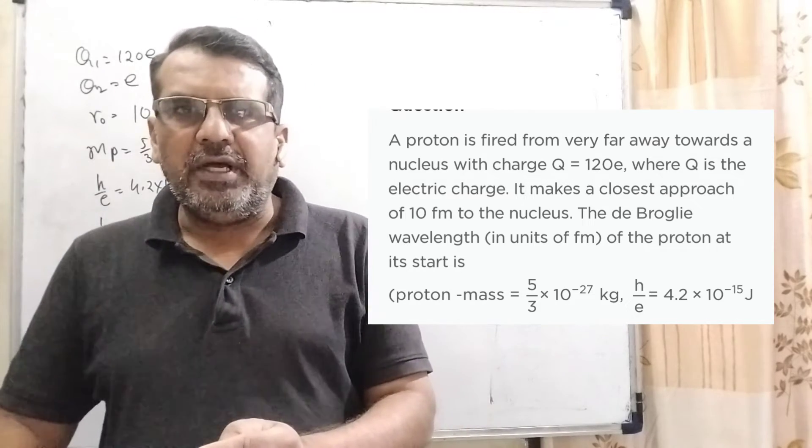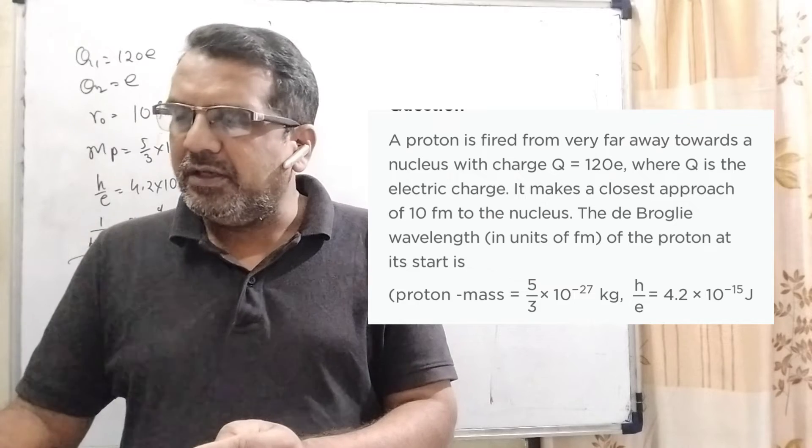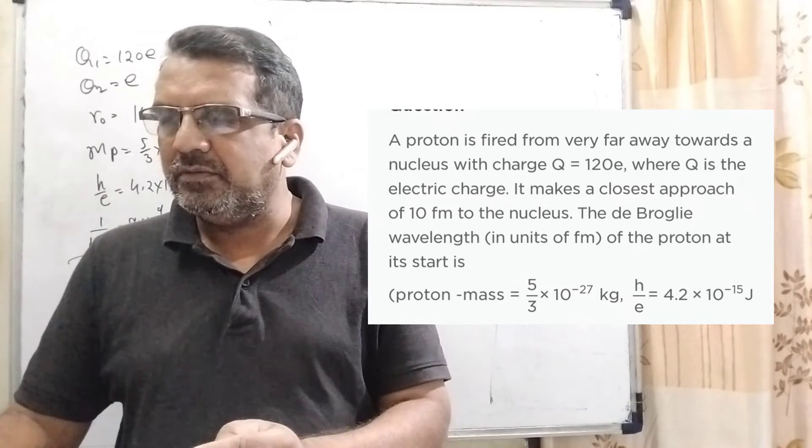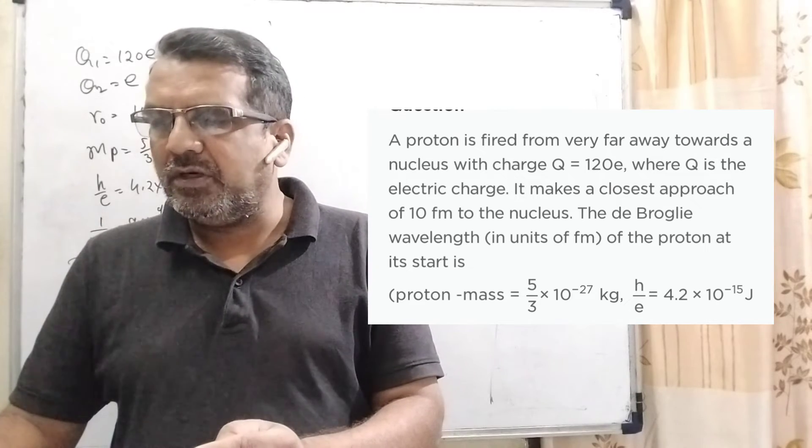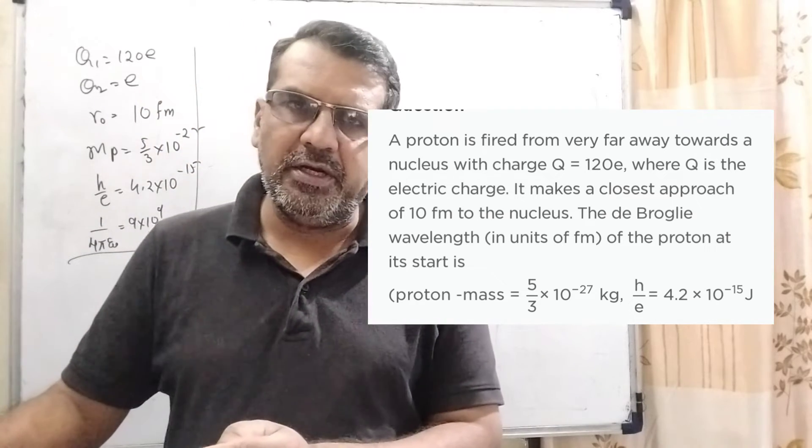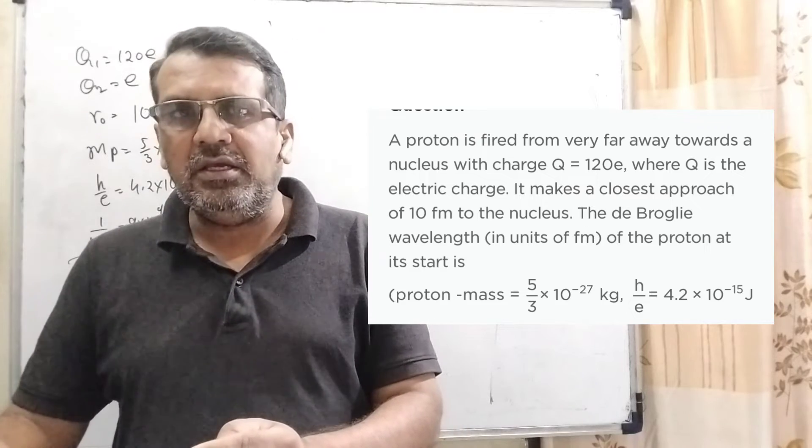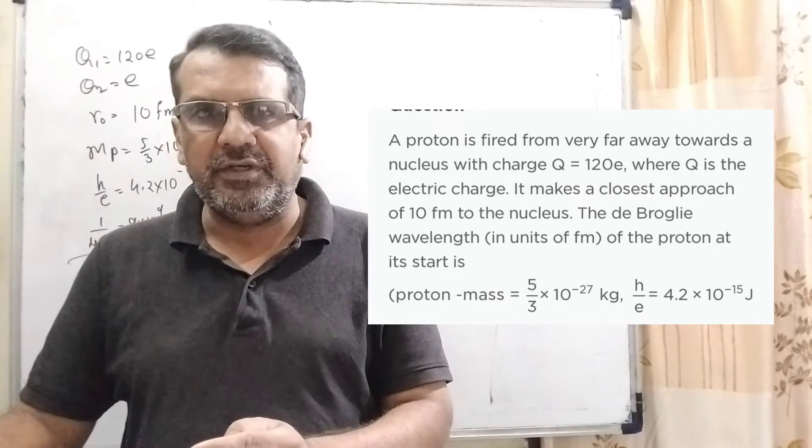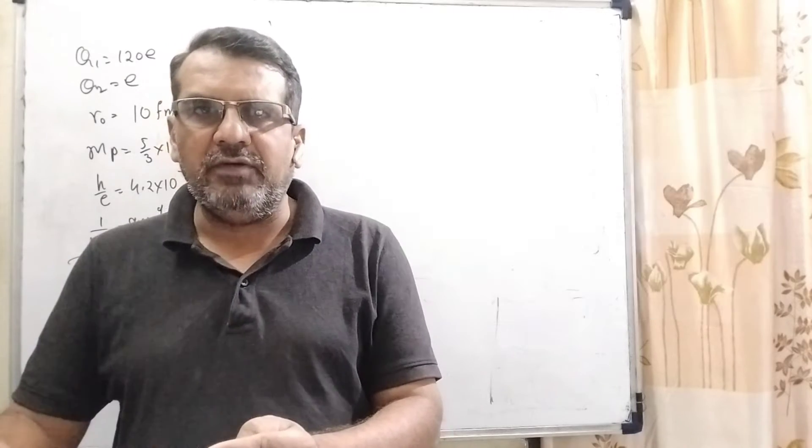Here we have to find out lambda. Some values are given: mass of proton is 5/3 × 10^-27 kg, 1/(4πε₀) is 9 × 10^9, and h/e ratio is 4.2 × 10^-15. This question is from 2013 JEE Advanced.